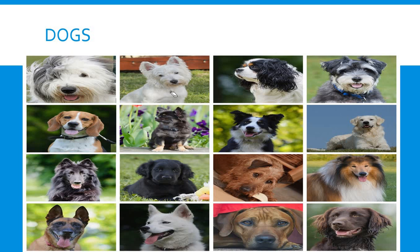Ctrl+L will bring up the laser pointer. This helps you point to a particular item in your presentation. You can now use this to point — this is the dog we are talking about, or this one and this one. Ctrl+L brings up the laser pointer so that you can point exactly at what you are telling the audience about. To come out of this, you click Ctrl+L again and you're out.